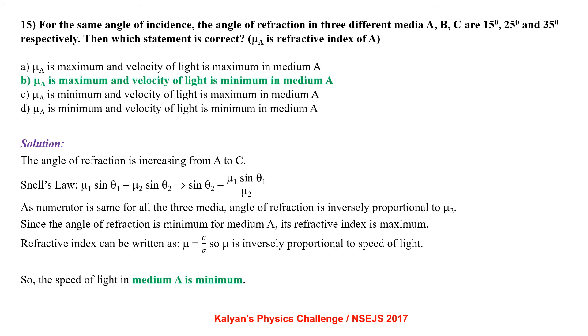For the same angle of incidence, the angle of refraction in three different media A, B and C are 15, 25 and 35 degree respectively. Then which statement is correct? Mu a is refract index of A. Mu a is maximum and velocity of light is maximum in medium A. Mu a is maximum and velocity of light is minimum in medium A. Mu a is minimum and velocity of light is maximum in medium A. Mu a is minimum and velocity of light is minimum in medium A.